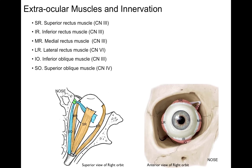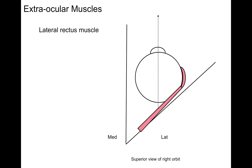The superior oblique are two muscles that attach to the eyeball at an angle. At the bottom of the screen, you see a superior view of the right orbit and an anterior view of the right orbit. We'll go back and forth between these two views.